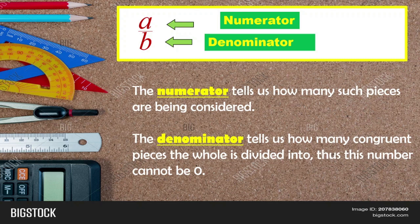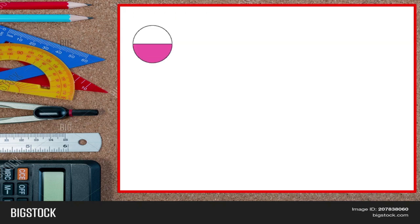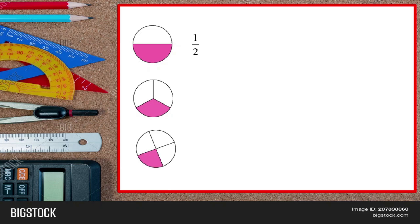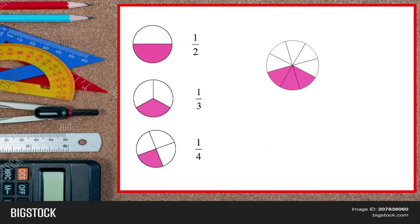Let me give more examples about fractions. We have one circle divided into two with one shaded — that is one-half. Then divided into three with one shaded — that is one-third. Divided into four with one shaded — that is one-fourth. Then a circle divided into eight with three shaded — counting one through eight, so denominator is eight and three are shaded — that gives us three over eight.